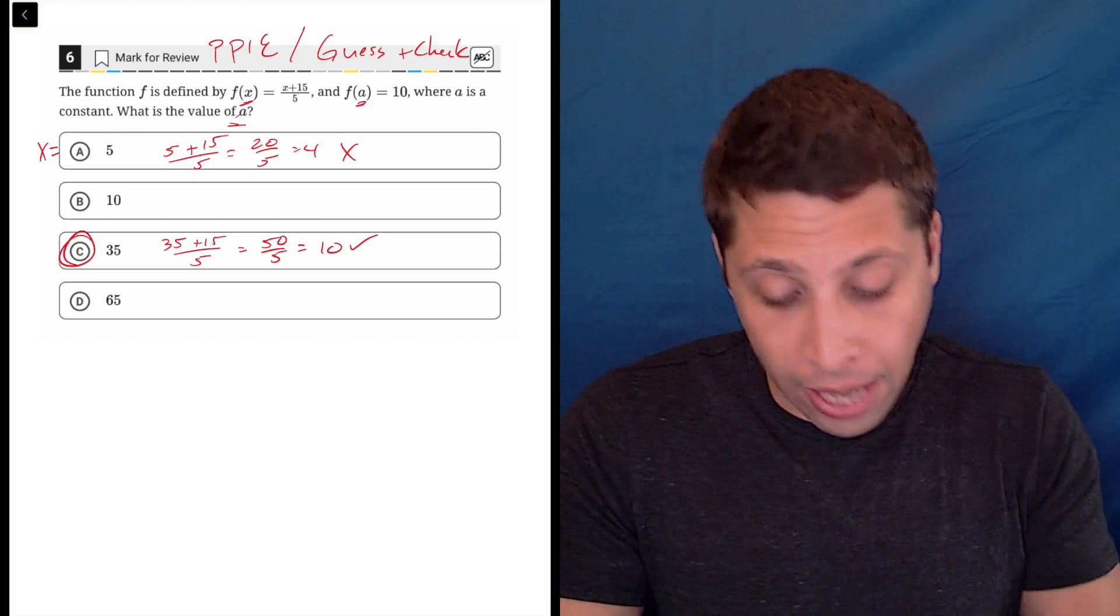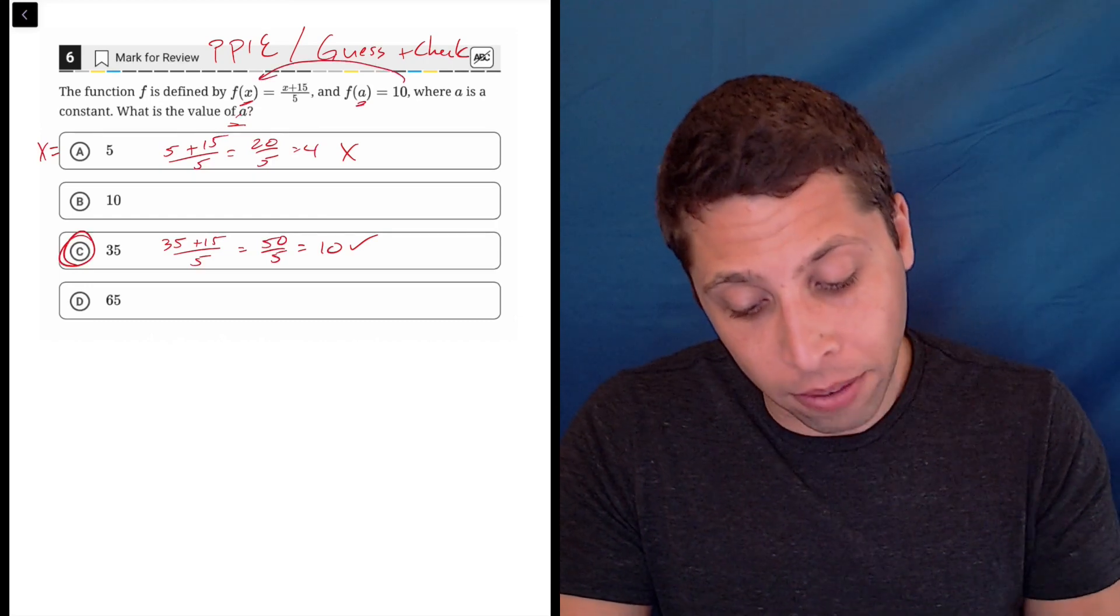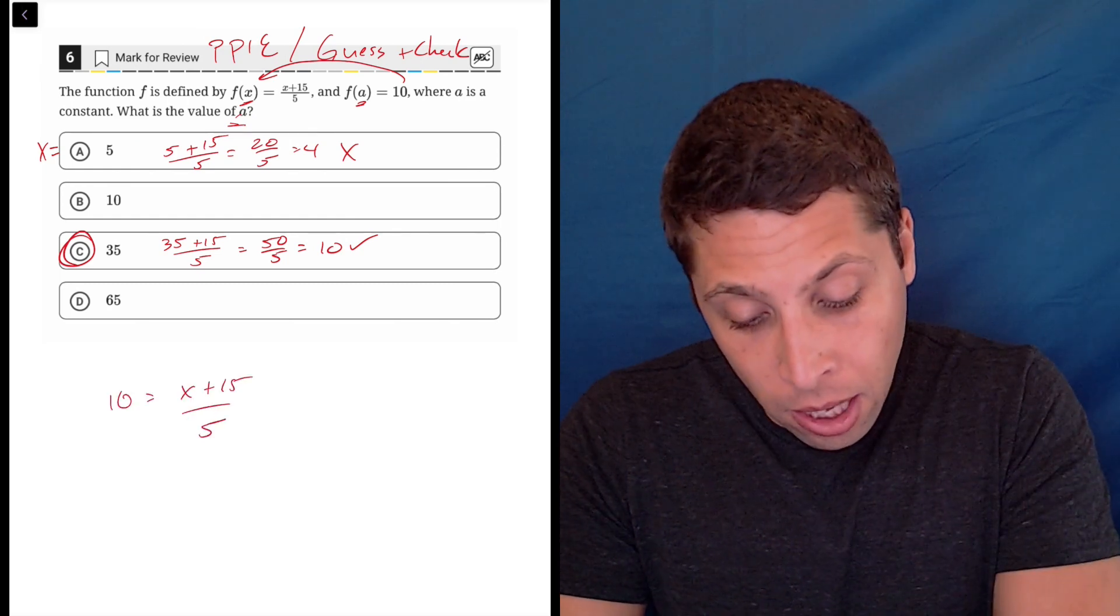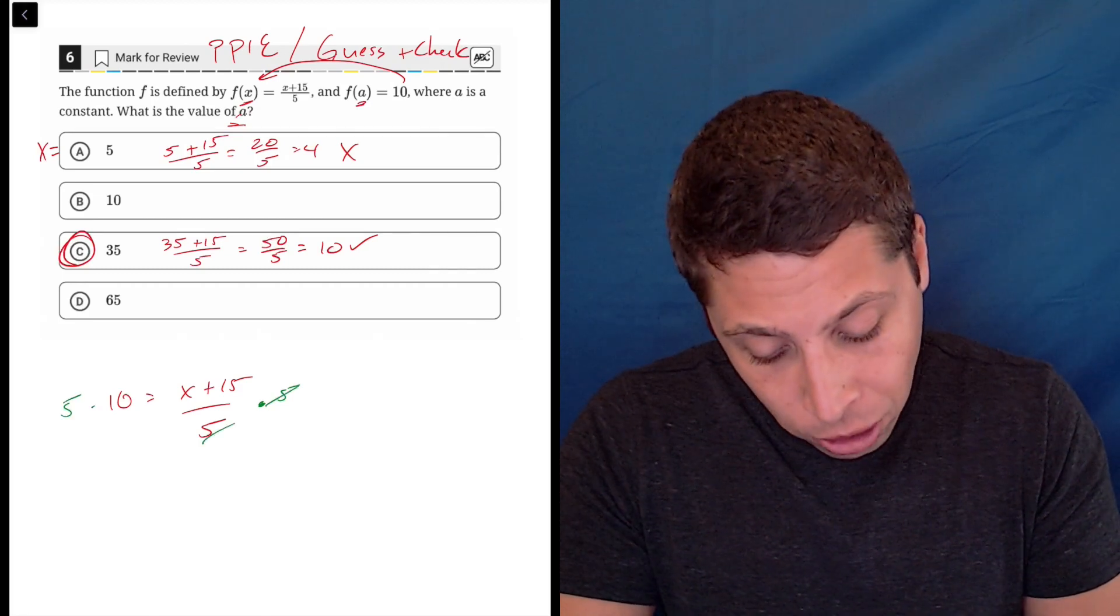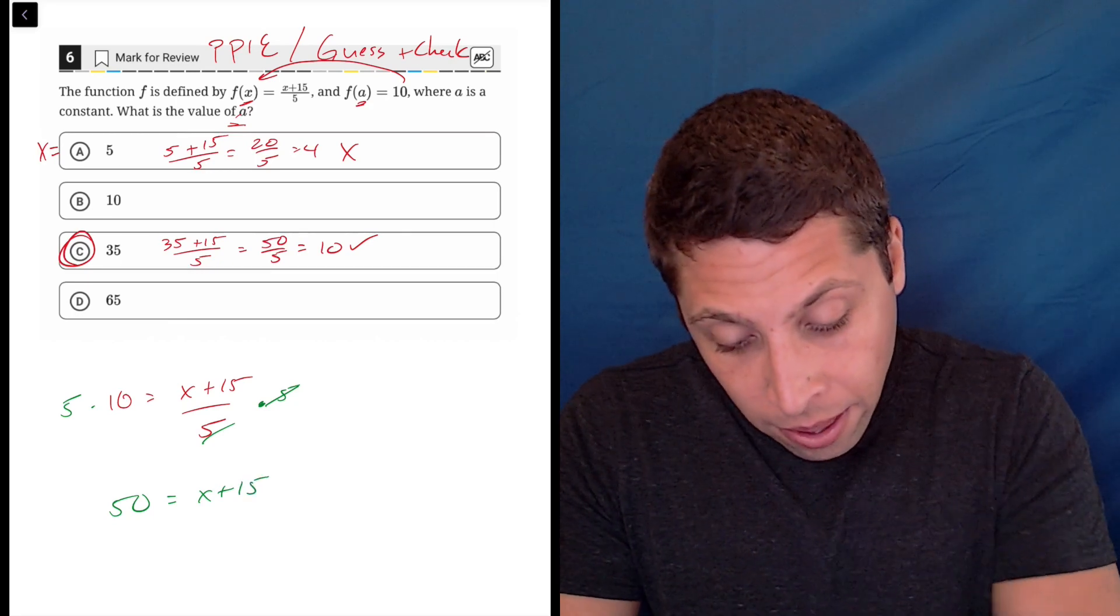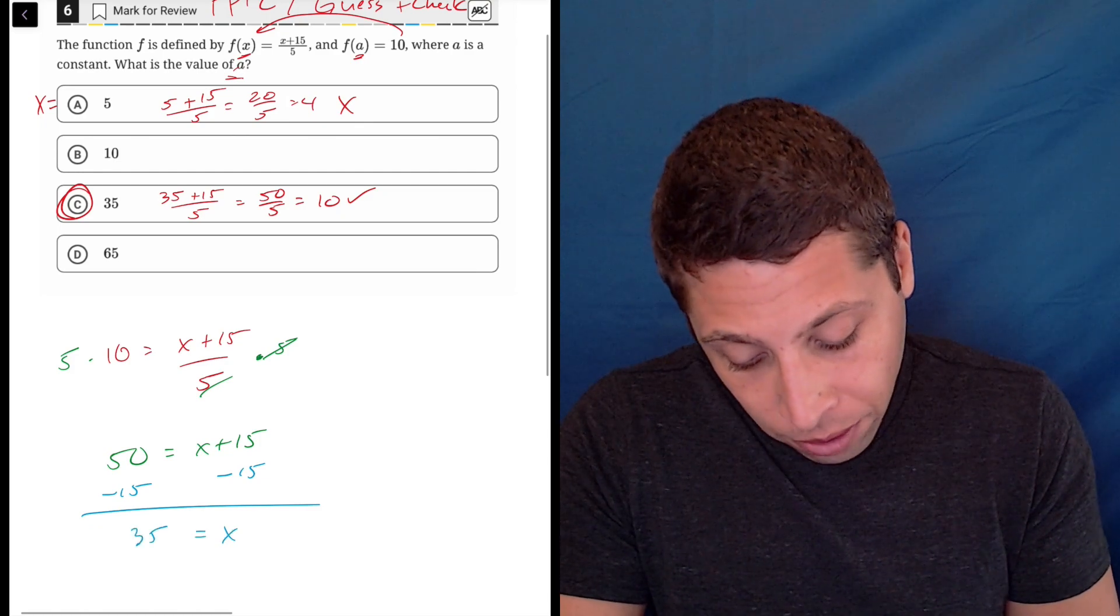If you wanted to do this algebraically, you could because 10 is going to go in place of f(x). So you could do 10 equals x plus 15 over 5. You would solve this by first multiplying both sides by 5 to get 50 equals x plus 15, then subtract 15 from both sides and you're left with x equals 35.